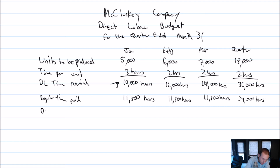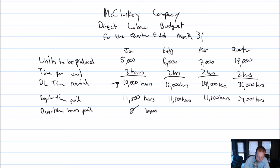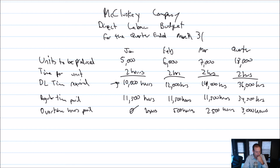So 11,500 times three months is 34,500 hours paid at the regular rate. Now what about overtime? In the first month there's no overtime — they didn't work up to 11,500, so no overtime. In the second month they worked 12,000 hours; 11,500 were paid at the regular rate, so 500 hours will be paid at overtime rates. In March it's 14,000 hours required, so 2,500 hours will be paid at the overtime rate. The total overtime is 3,000 hours.